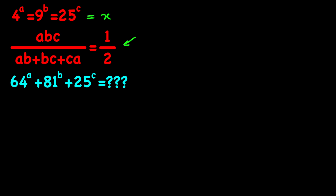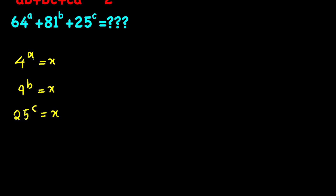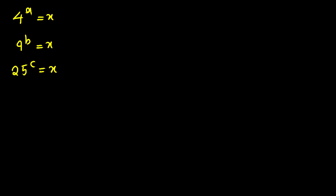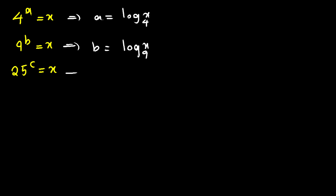We know that 4 to the power of a equals x, 9 to the power of b equals x, and 25 to the power of c equals x. Applying the definition of logarithm, we get a equals log x with base 4, b equals log x with base 9, and c equals log x with base 25.